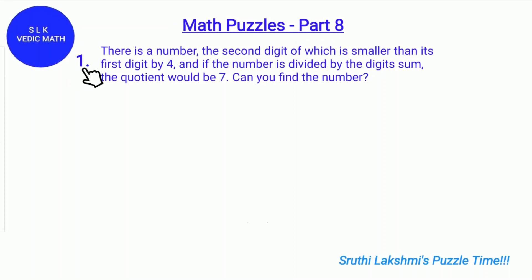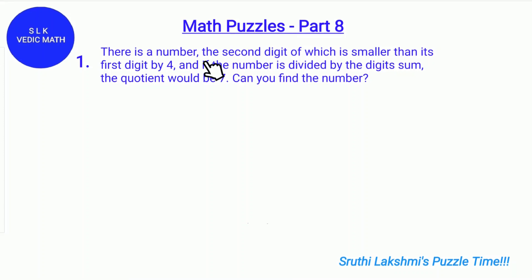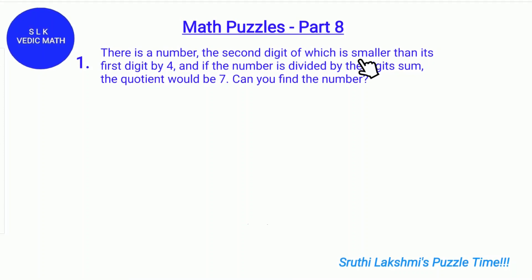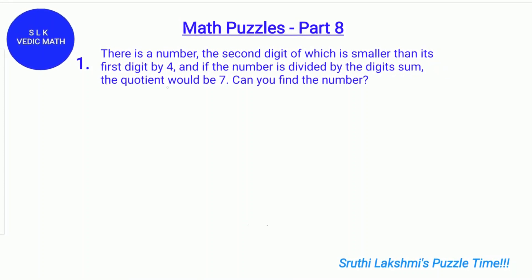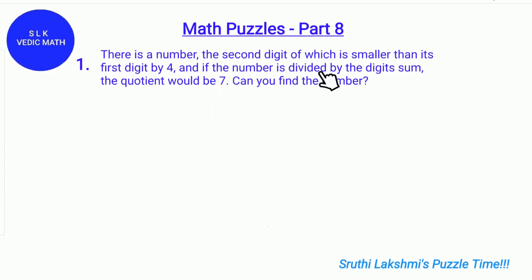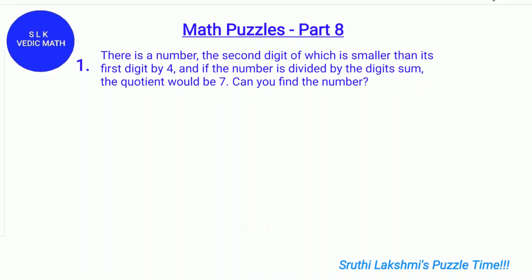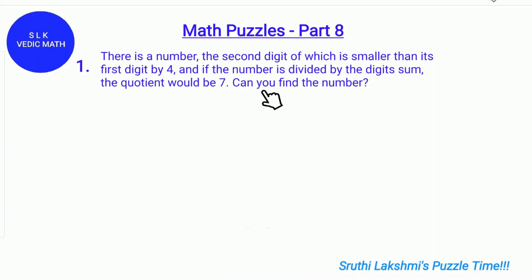Puzzle number 1. There is a number the second digit of which is smaller than its first digit by 4, and if the number is divided by the digit sum, the quotient would be 7. Can you find the number?